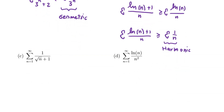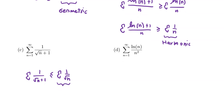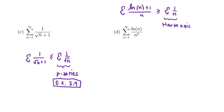Next, consider the series with terms 1/√(n+1). We try comparing with 1/√n, which is indeed bigger than or equal to 1/√(n+1). Now 1/√n is a p-series with p = 1/2, so it diverges. However, since the series in question is less than or equal to something that diverges, we can't actually conclude anything from this relationship.